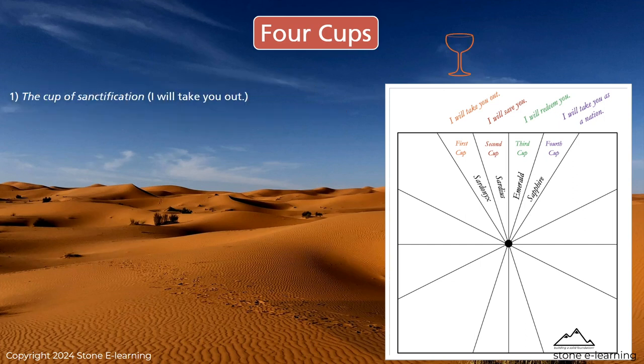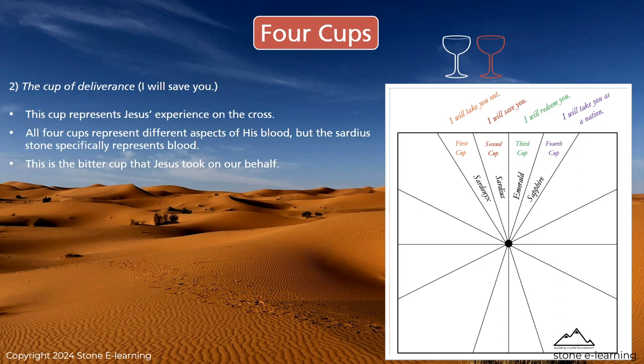The first cup is a cup of sanctification: 'I will take you out.' The second cup is a cup of deliverance: 'I will save you.' This cup represents Jesus' experience on the cross. All four cups represent different aspects of his blood, but the Sardius stone specifically represents blood. This is the bitter cup that Jesus took on our behalf.